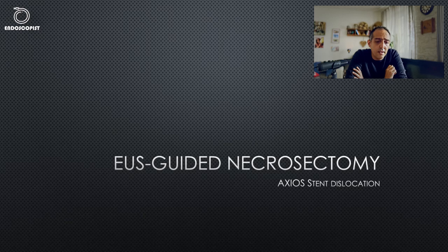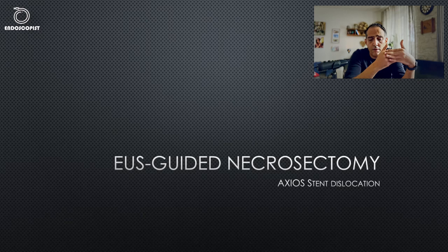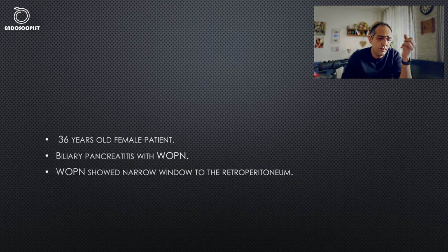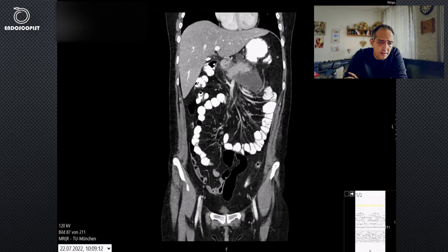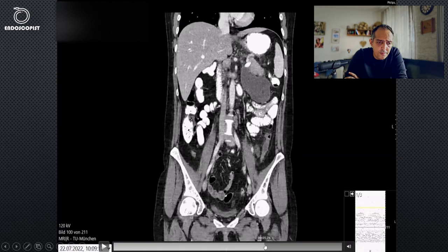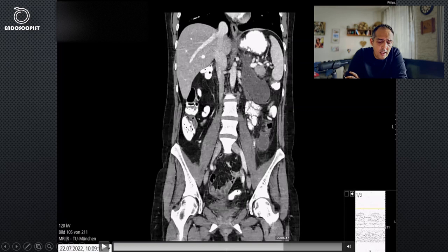This case is interesting because it is very rare for a stent to dislocate during necrosectomy or pseudocystic drainage, since the gastric wall is typically part of the capsule of the walled-off pancreatic necrosis. This was a 36-year-old female patient with biliary pancreatitis who developed walled-off pancreatic necrosis. As seen in the CT images four weeks after the acute pancreatitis, there is a walled-off pancreatic necrosis adjacent to the stomach — with a very small window between them, making drainage dangerous and requiring accurate puncture, with a high perforation risk.